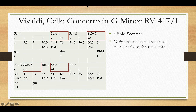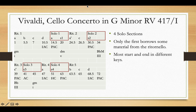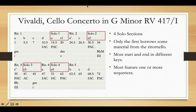There are four solo sections. Only the first of these borrows material directly from the ritornello — solo 1 begins with a little bit from idea A but then spins off into solo material. Most of the solo sections start and end in different keys: solo 1 starts in G minor and modulates to D minor; solo 2 starts in D minor modulating to B-flat; and solo 3 starts in B-flat modulating to G minor. The exception is solo 4, which stays in G minor from start to finish. Most of these sections feature one or more sequences, which is not surprising since in the Baroque era modulation was typically accomplished through a modulating sequence.